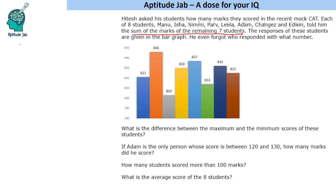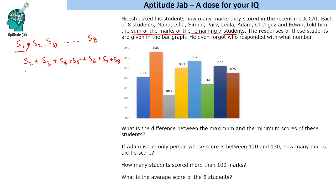Let's say the eight students are S1, S2, S3, and so on up to S8. When you ask S1, S1 will tell you the value of S2 + S3 + S4 and so on. If you ask S2, S2 will give you S1 + S3 + S4 + S5 + S6 + S7 + S8. If you ask S3, S3 will tell you S1 + S2 + S4 and so on. One number is always missing from each response.